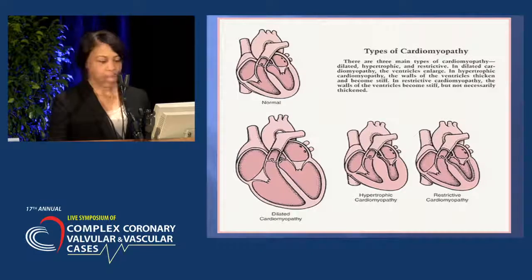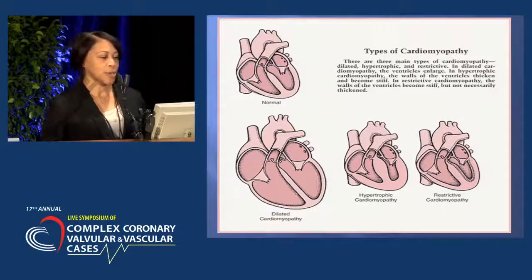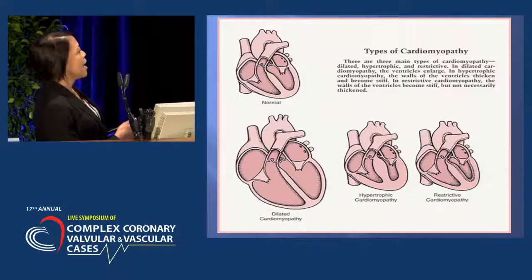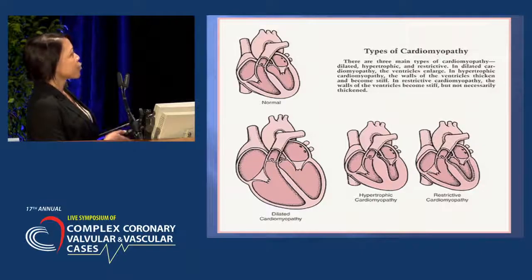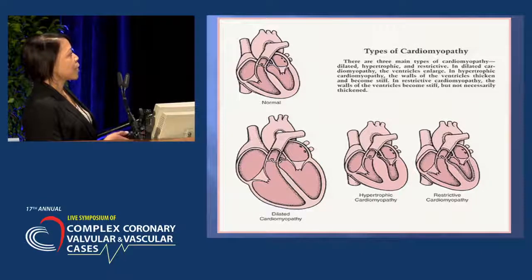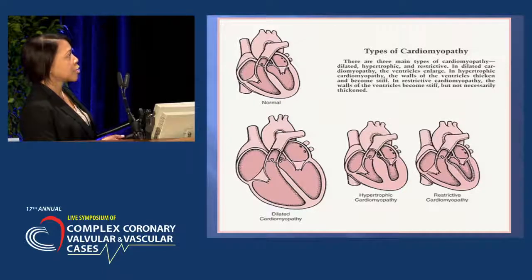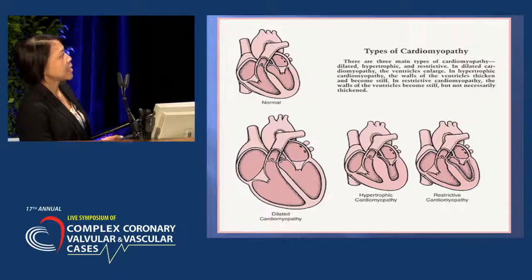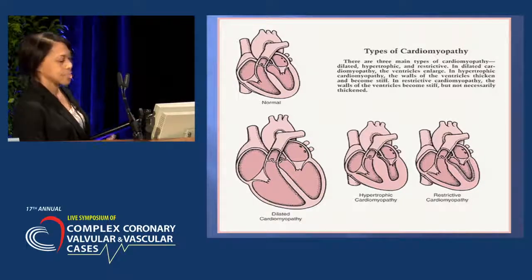This diagram shows what a normal heart looks like. For dilated cardiomyopathy, you can see that the ventricles are enlarged. For hypertrophic, the septum is enlarged and the ventricles are stiffened. And with restrictive, the ventricles are restricted but not necessarily enlarged.